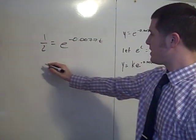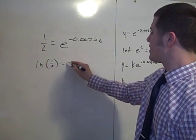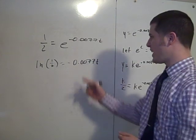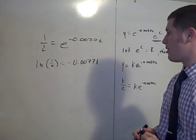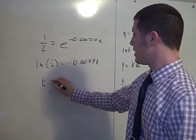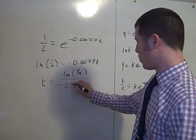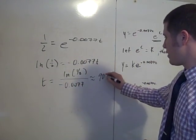Take the natural log of both sides, and we end up with the natural log of one-half is negative 0.0077t, and then divide both sides by negative 0.0077, and there you have it. So t equals the natural log of one-half divided by negative 0.0077, which I think was about 90 years.